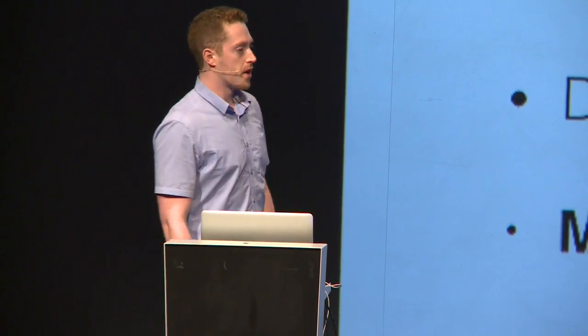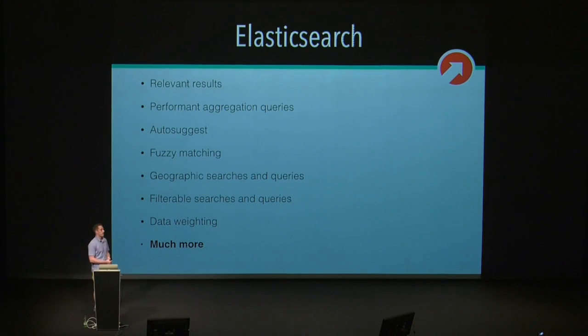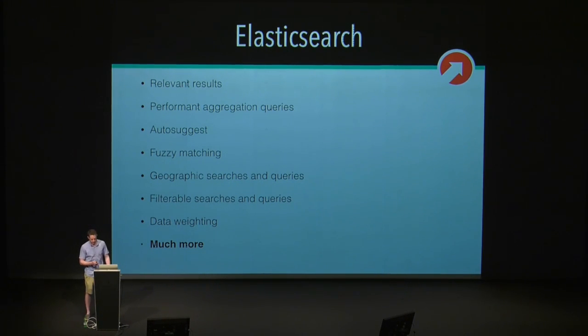With Elasticsearch, we can do a lot of cool stuff. We can handle relevancy with results, do performant aggregation queries, do things like autosuggest where you type in the input box and it instantly suggests things to you, similar to what Google does. We can do fuzzy matching to handle things like misspellings in search. We can actually do geographic search. In general, we can do filterable searches and queries much more performantly, and we can weight data. There are tons of real-use applications for Elasticsearch and WordPress.